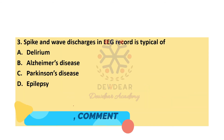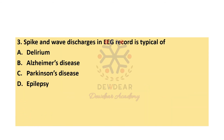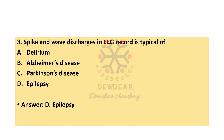Question 3: Spike and wave discharges in an EEG record are typical of — options: delirium, Alzheimer's disease, Parkinson's disease, epilepsy. The correct answer is option D, epilepsy. EEG was first used by Hans Berger in 1924.